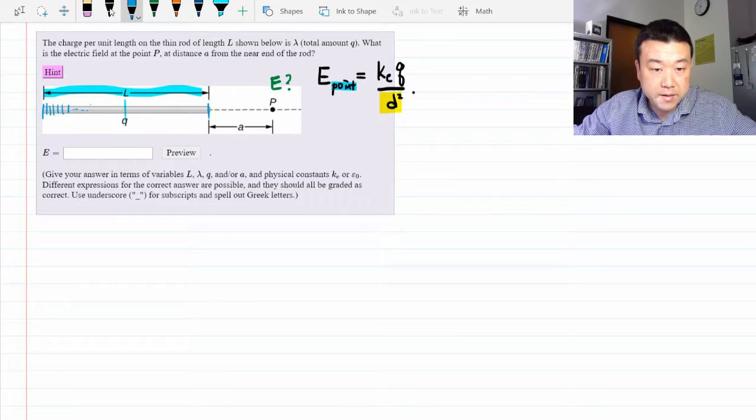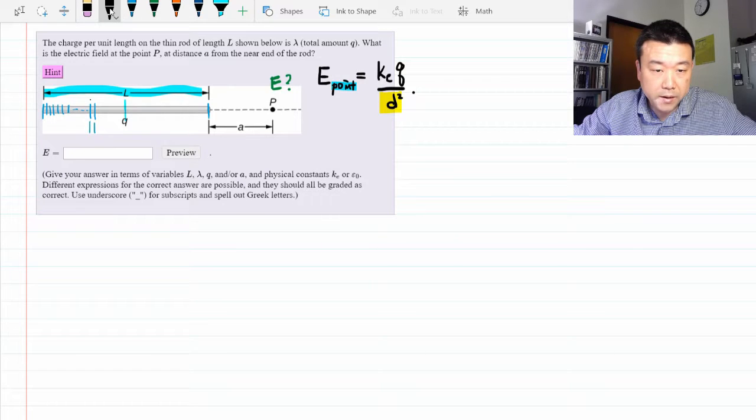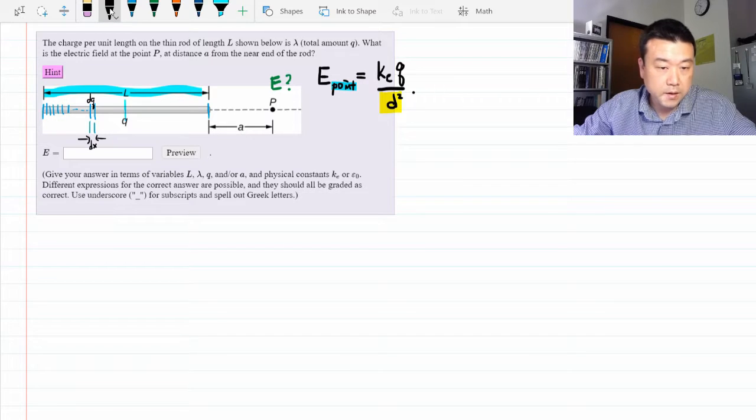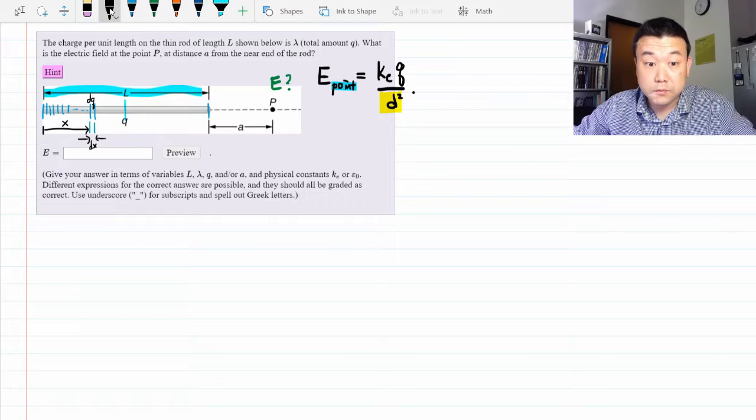So let's take a representative piece here, which is going to have some small amount of charge, dq. It will have the thickness of dx. And we need something to parameterize it with. It will be a distance x from the left hand of the rod. So this is what we can say.